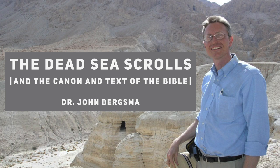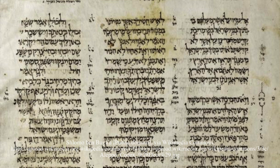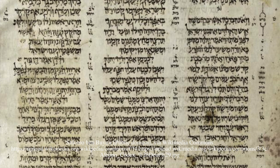Before Qumran, before 1947, what did you have to deal with? Say you want to translate the Bible into English — what are you going to translate from? Well, you have many things to choose from. These are, perhaps for Catholics, the three most important. First of all, you have what's called the Masoretic Text. This is what Bible scholars before 1947 had to deal with.